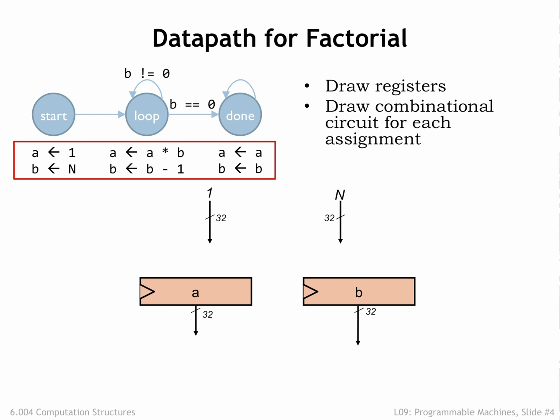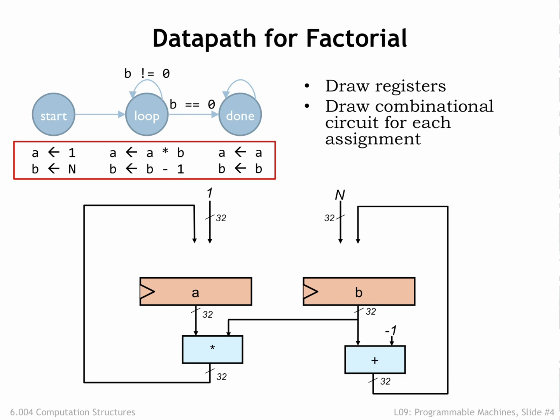In the loop state, we need to compute a times b for the a register and b-1 for the b register. Finally, in the done state, we need to be able to reload each register with its current value.